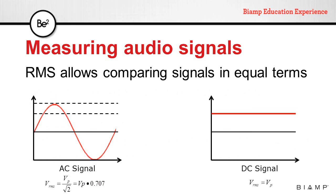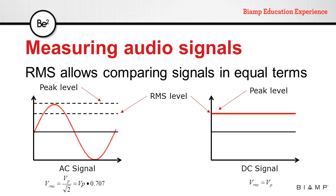For instance, if we had a light bulb and used an AC signal to turn it on, the amount of light would be equivalent to the RMS level of that signal. We could obtain the same amount of light with a DC signal with the same RMS level, even though the peak level is different. As long as the RMS value is the same, the amount of energy delivered is the same regardless of the peak level.